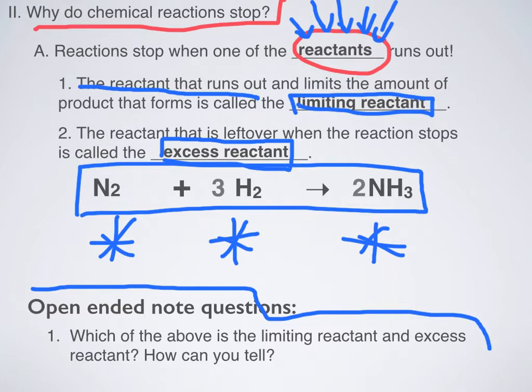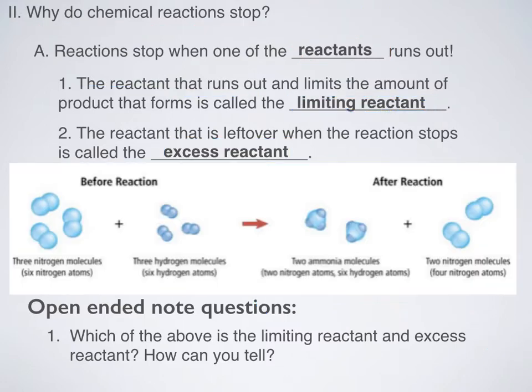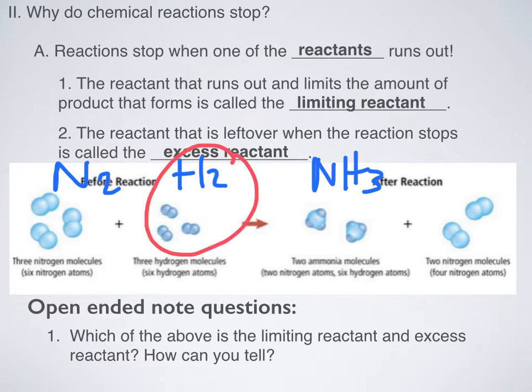So that picture looks like this. Take a look at my reaction. So these guys are my N2s, these are my H2s, and then these are my NH3s. So before the reaction, I have three nitrogen molecules. I have three hydrogen molecules. I make two ammonia molecules. And so which thing did I run out of first? Answer? I ran out of hydrogen.